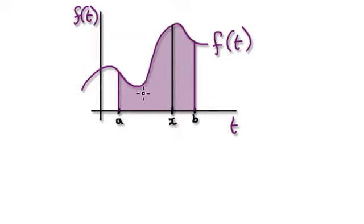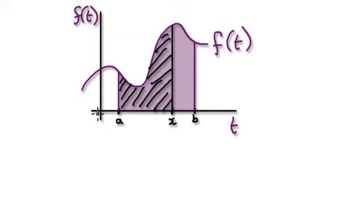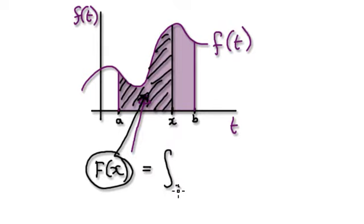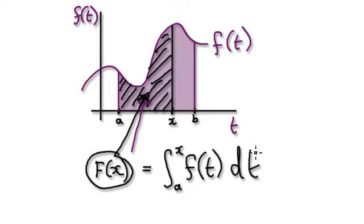With the Fundamental Theorem of Calculus 2, we are really looking at the area between a and x. X can slide back and forth, so let's call this area capital F of x. Capital F of x equals the area from a to x of f of t dt, because t is something that changes somewhere in between.